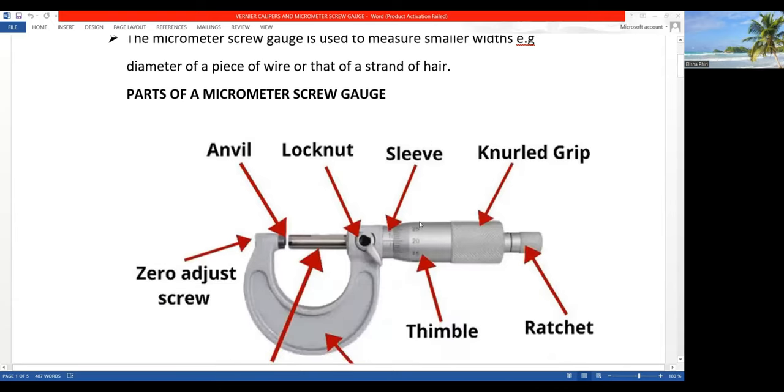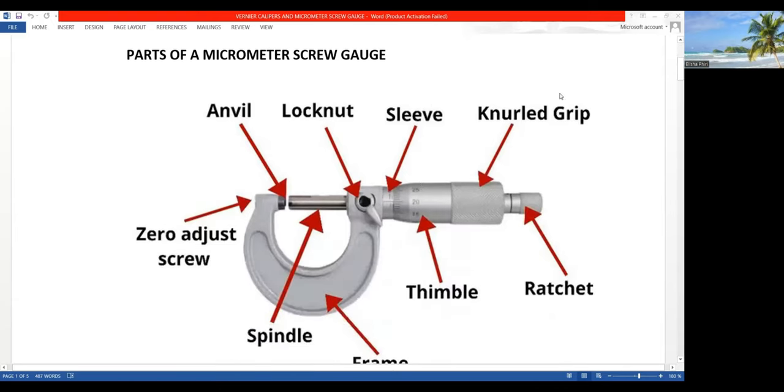So, let's quickly look at the parts of the micrometer screw gauge. We have a ratchet, then a thumb grip, then there's a thimble, and then there's a sleeve. And these are the two scales of a micrometer screw gauge. The thimble, that's where you find the other scale. And then on the sleeve, there's another scale.